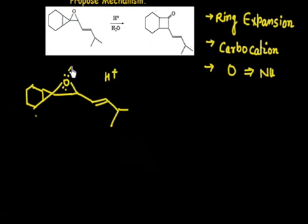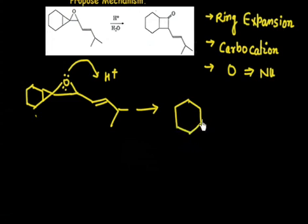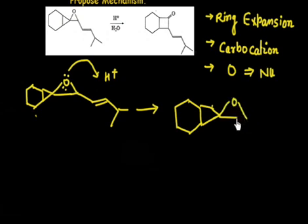Now if you add H+, the oxygen takes H+. So you will have a six-membered ring with a cyclopropane ring attached, and then you have O–H with a positive charge, and a double bond.